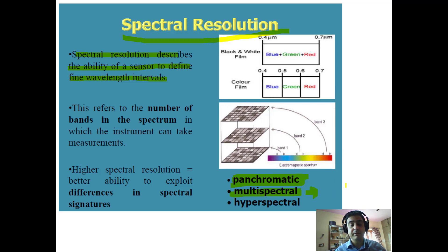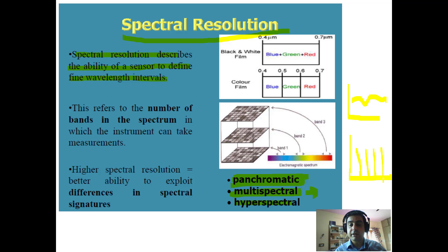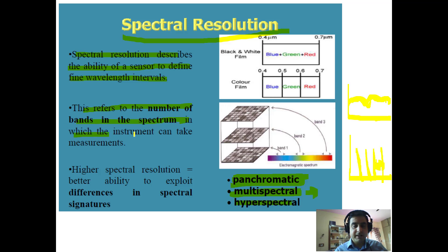Then we have hyperspectral, which has a continuity of spectrum unlike multispectral, which has breaks in between — meaning some wavelength data is missing. In hyperspectral, almost all wavelengths are represented. This refers to the number of bands in the spectrum in which the instrument can take measurements.